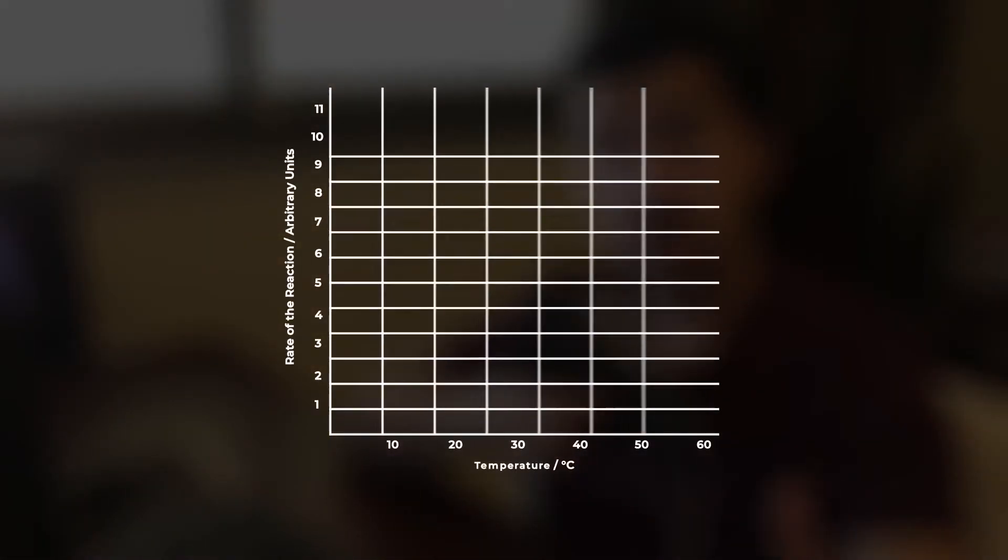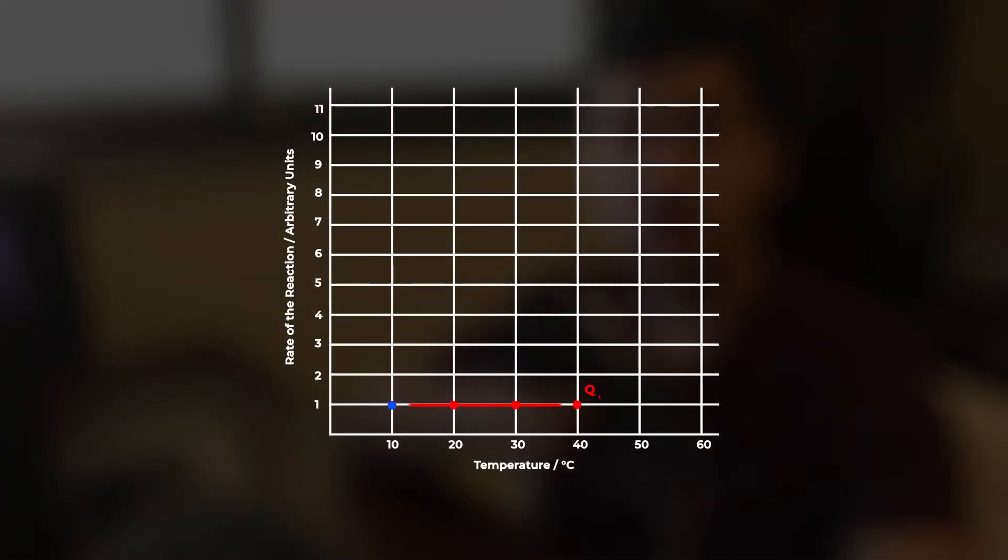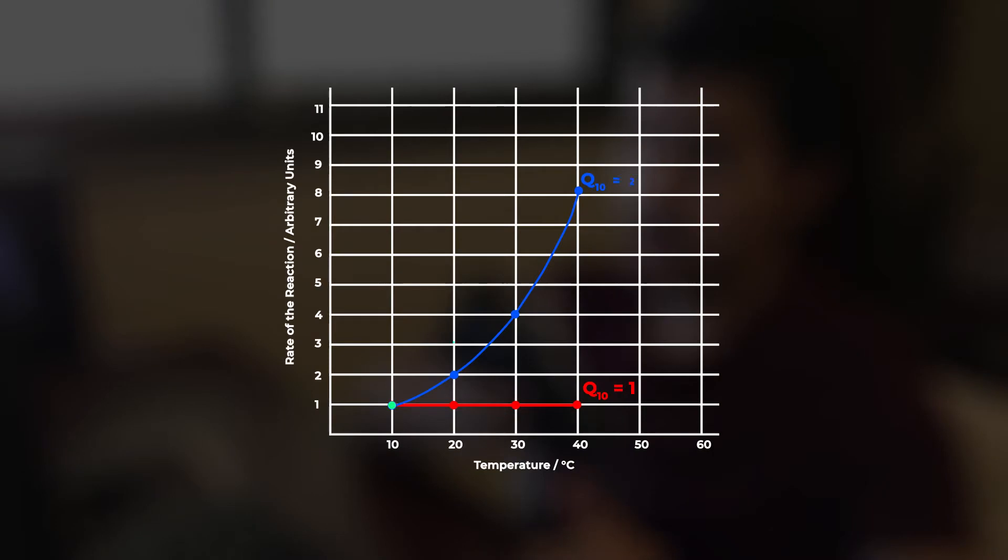Now let's take a look at some Q10 values and what they tell us. A Q10 of one tells us that the reaction is temperature independent. Regardless of the increase in temperature, the rate of reaction will remain the same. A Q10 of two tells us that the rate of reaction will double for every increase in temperature by 10 degrees Celsius.